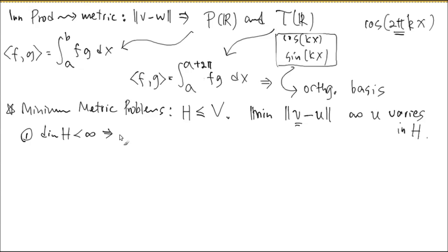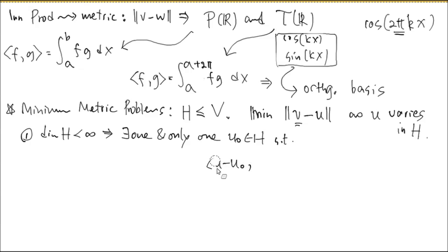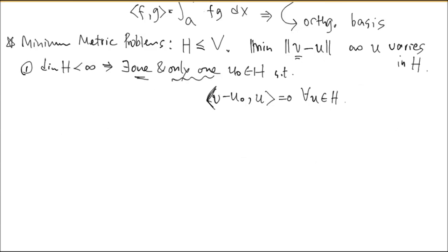The theorem states: if the dimension of H is finite, there is one and only one U₀ in H such that the inner product ⟨U - U₀, V - U₀⟩ equals zero for all U in H. We proved existence last time and today we prove uniqueness. In the three-dimensional case you can visualize this — H is a plane, and the minimum occurs at this orthogonality condition.